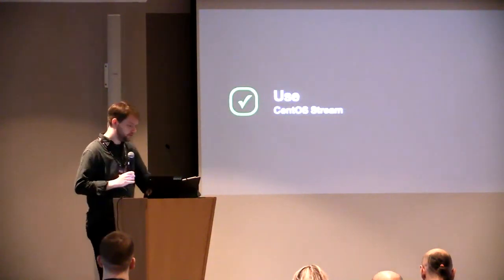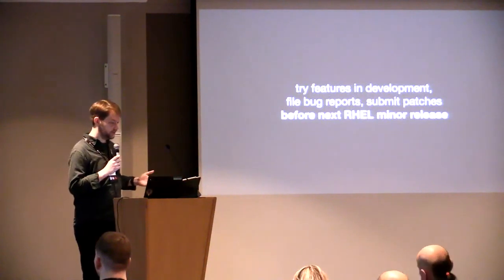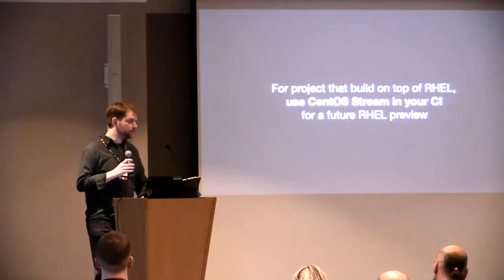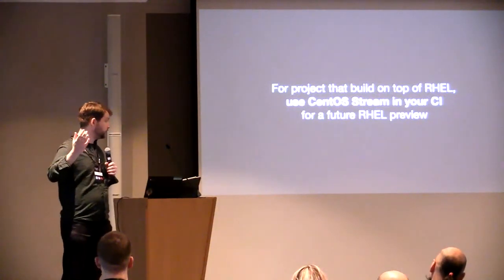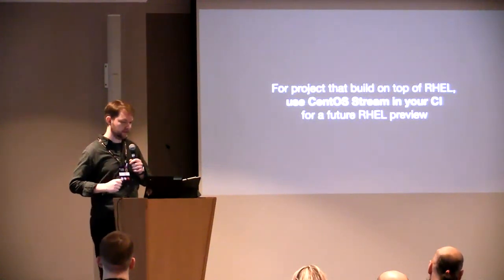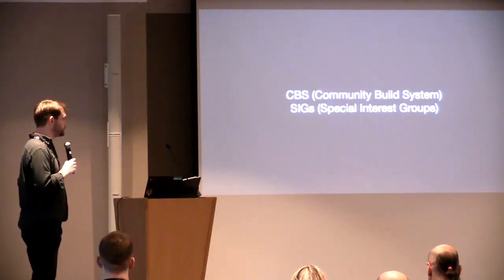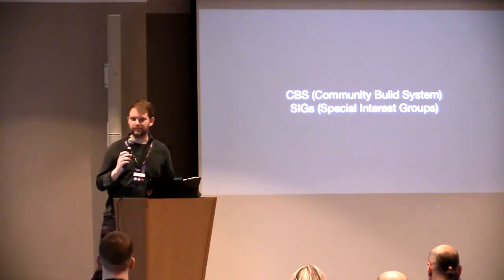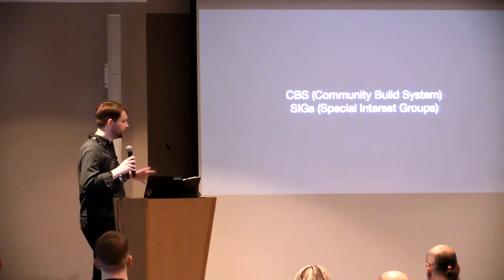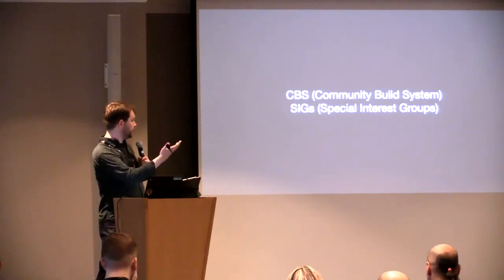You can use CentOS Stream to preview features that might be coming to RHEL or are coming to RHEL — try them earlier, see if your stuff works. You can submit patches and file bug reports. If you build on top of RHEL and have a project that builds on top of it, you can use CentOS Stream in your CI to get an idea of what the next versions might be and get fixes landed much much earlier, being ready for the next RHEL. We also have Special Interest Groups (SIGs) — many of them are here and there'll be talks throughout this conference. They do their work in CBS, the Community Build Service, and CentOS Stream lives there as one of the build routes.